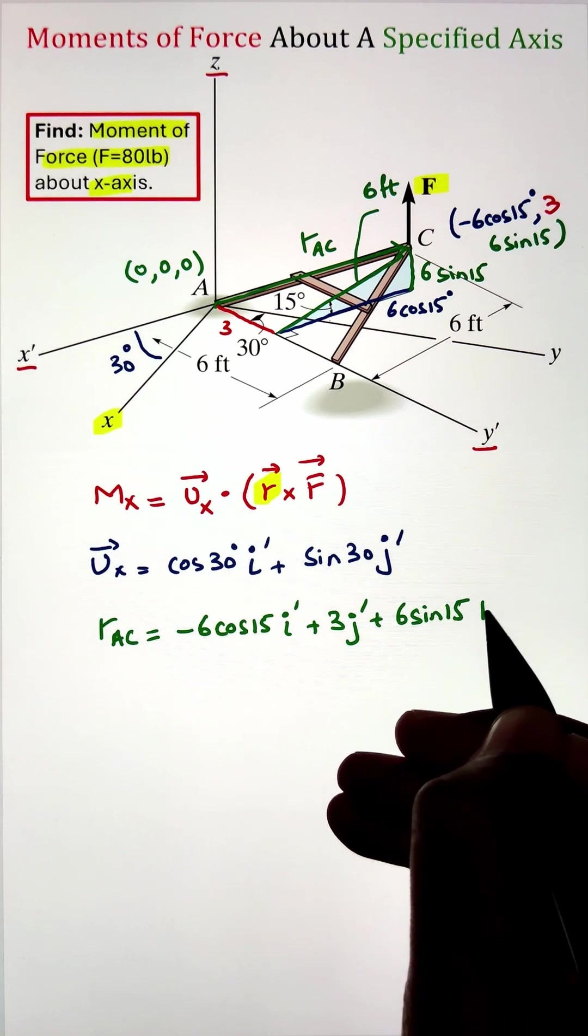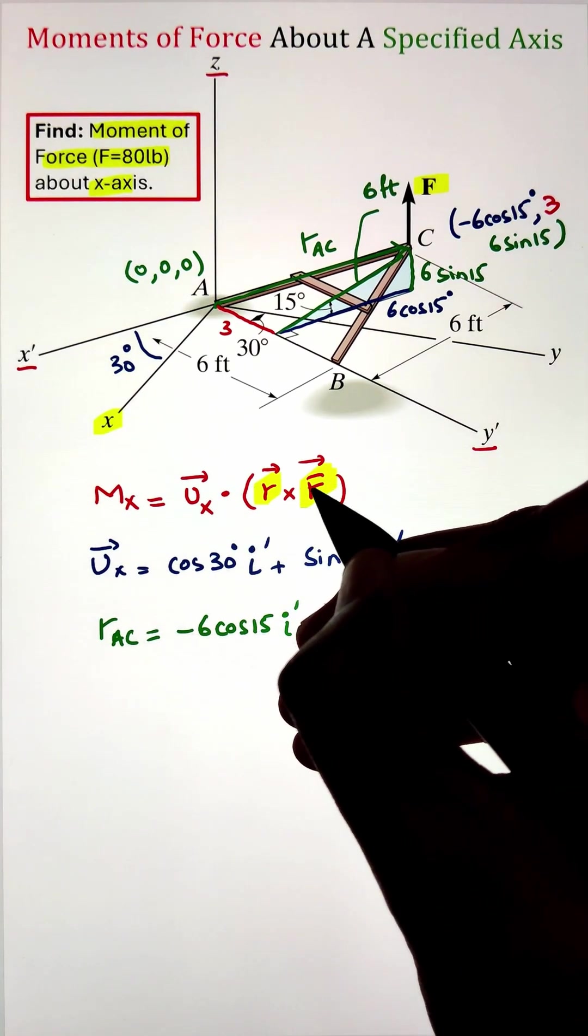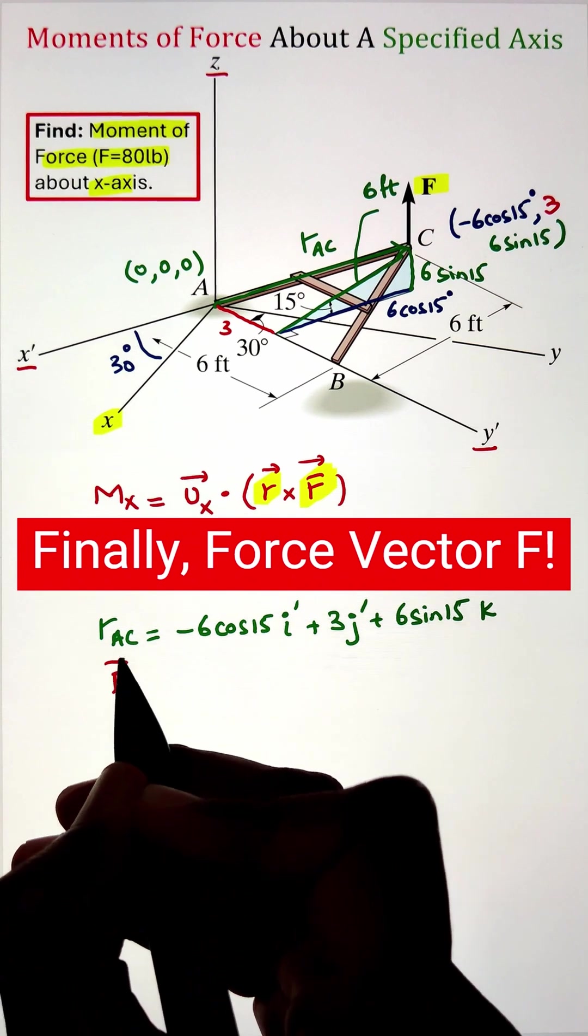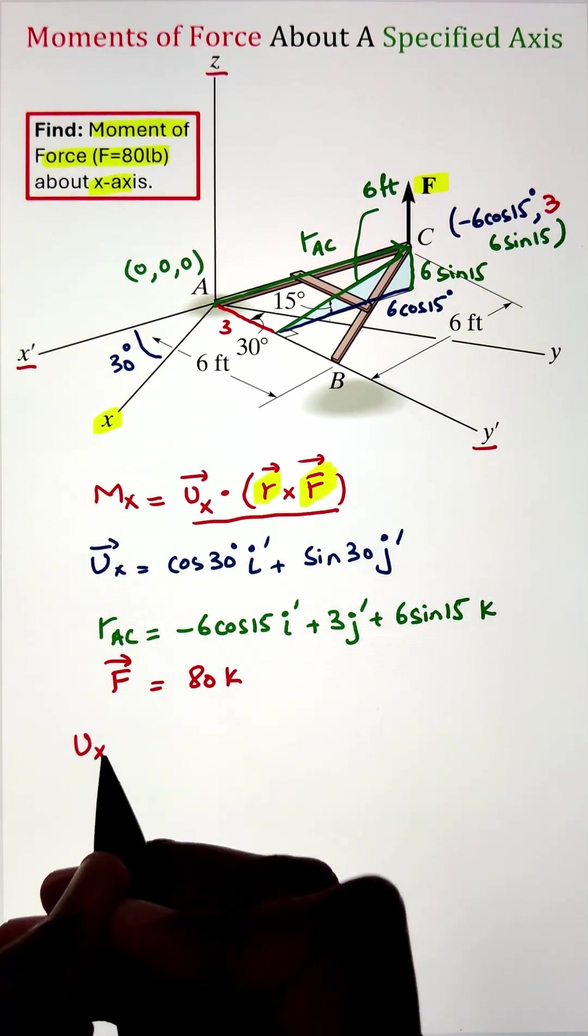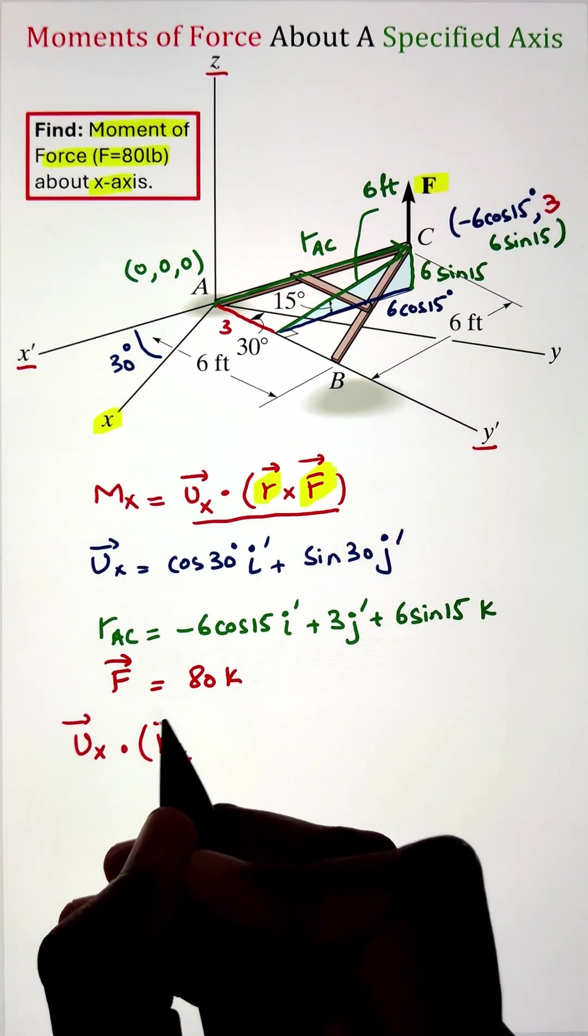Finally, I have our force vector that is acting vertically upward along the z-axis. So in terms of Cartesian form, the force vector is represented as 80k.